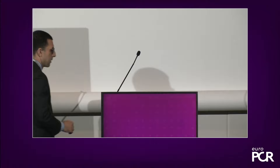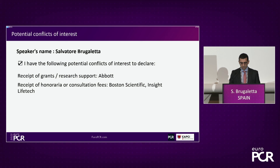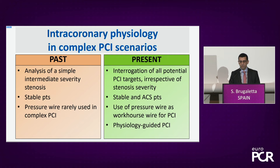We have to change the paradigm about how to use physiology in daily clinical practice. In the past, physiology was used for analyzing intermediate lesions, but now we're using it a lot in three-vessel disease, including stable patients and stabilized ACS patients. Sometimes we use the pressure wire as a workhorse wire for PCI, which is not always the best solution. The key concept to stress is physiology-guided PCI, which is something totally new.